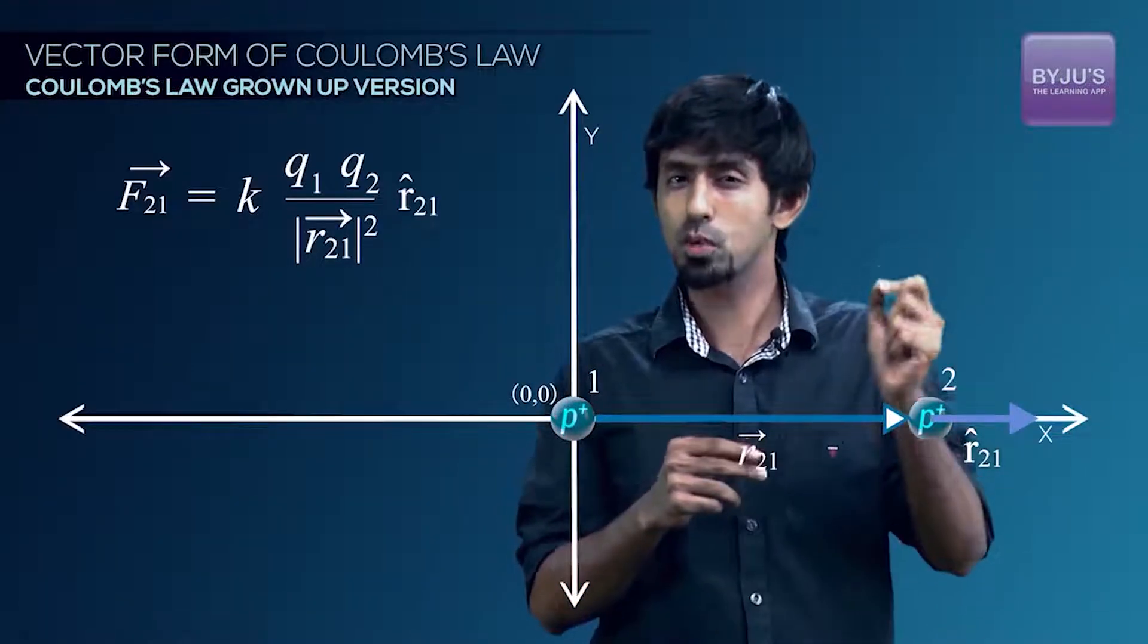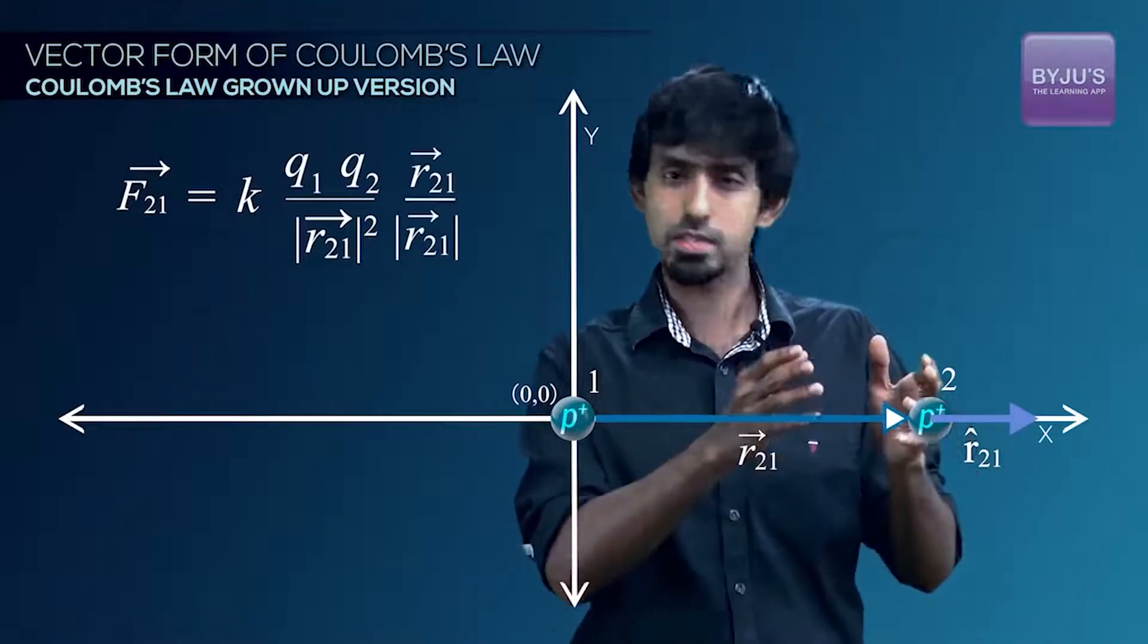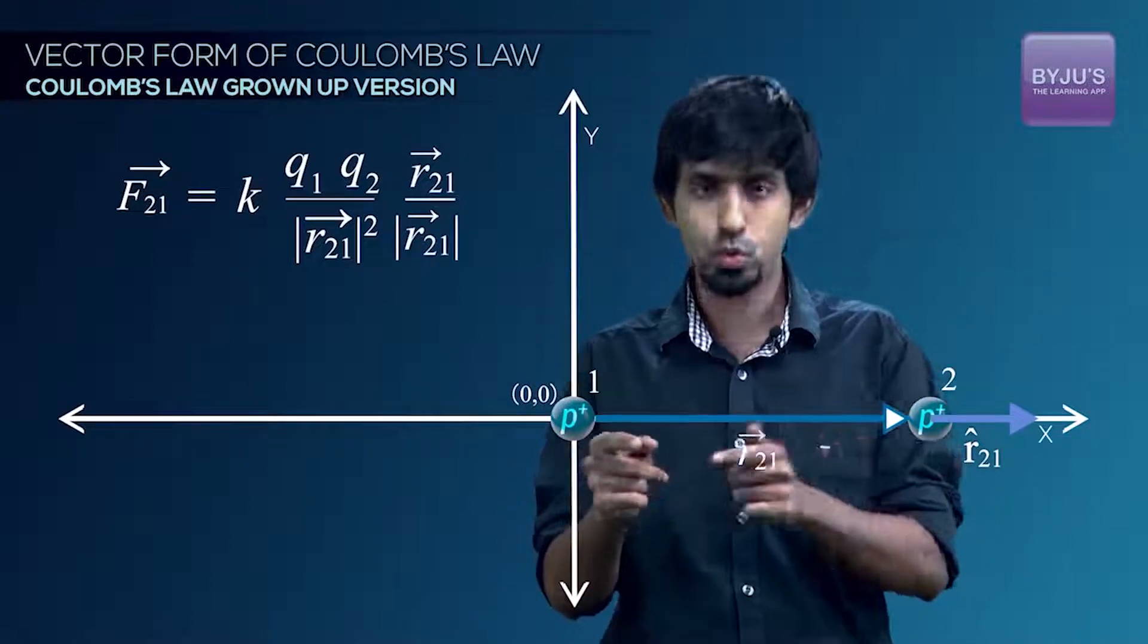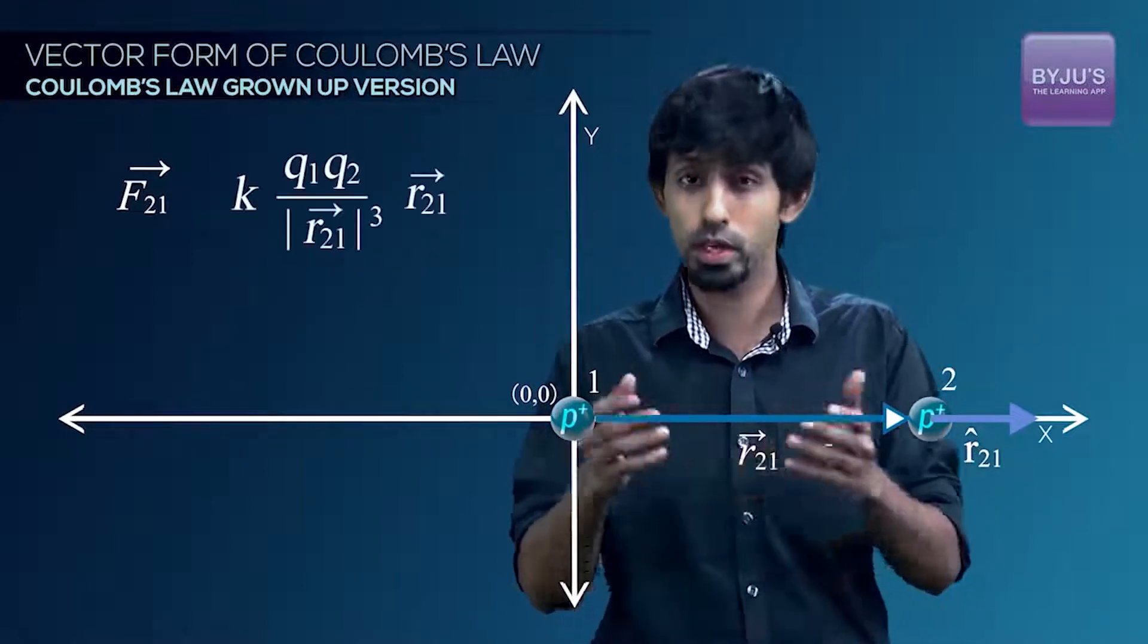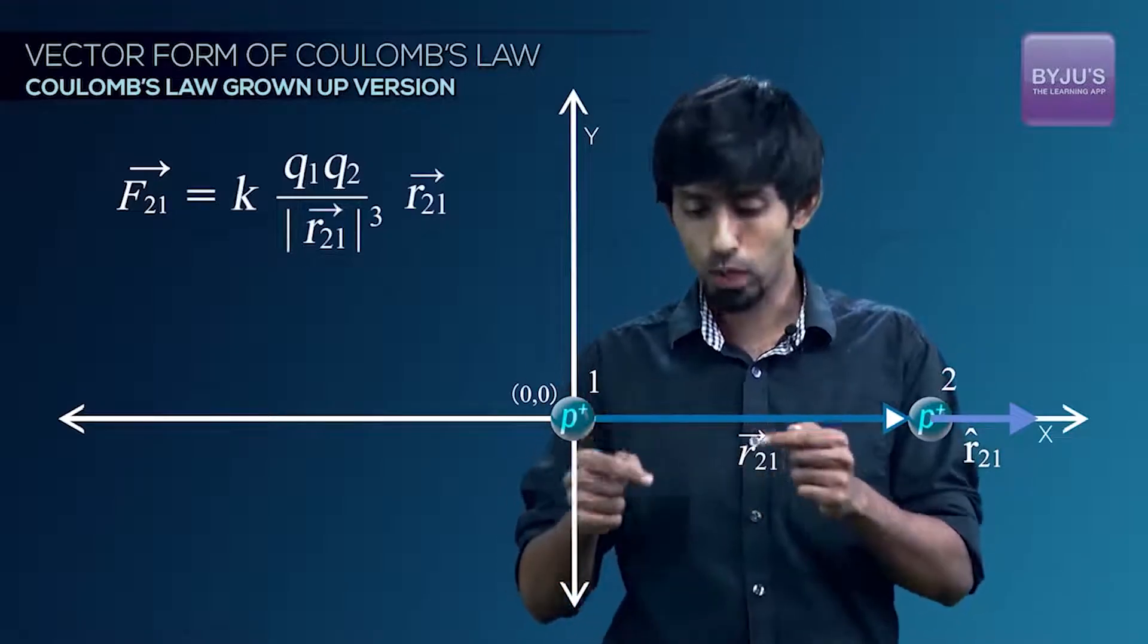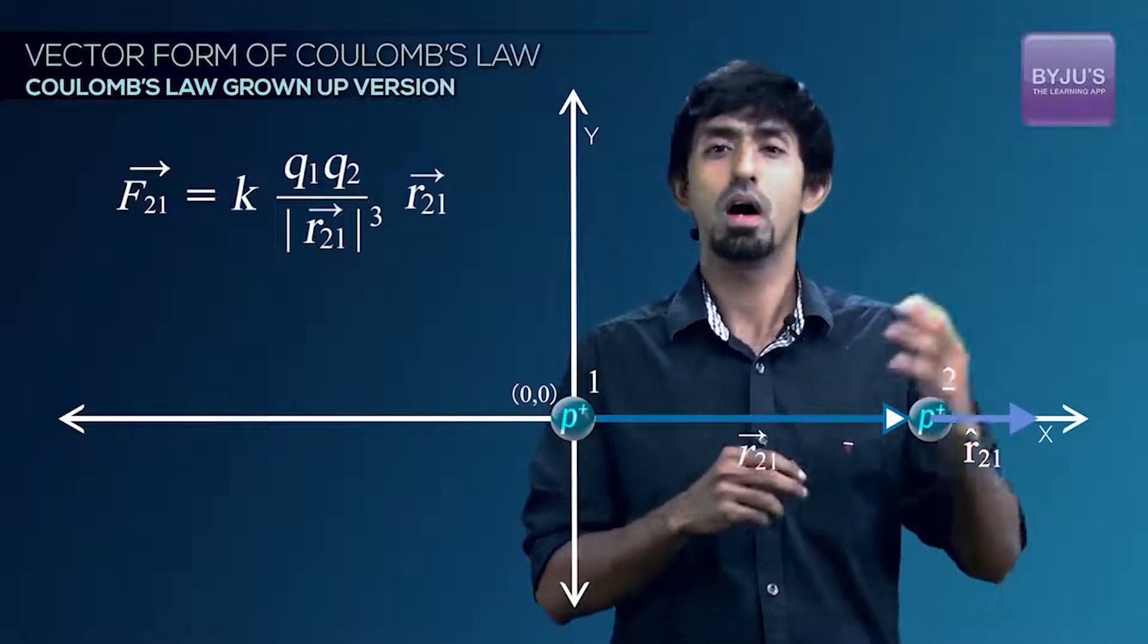That's right. R21 vector divided by the magnitude of R21 vector. So you replace R21 cap with that. Then you can merge the square term with a single term below. You'll get KQ1Q2 by R21 magnitude, the magnitude of R21 vector, the whole cubed into R21 vector itself.